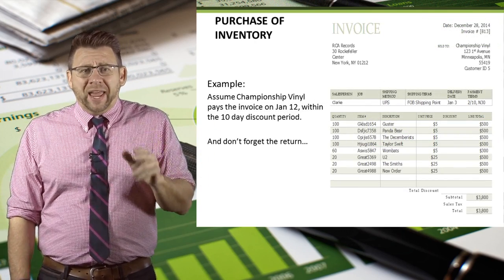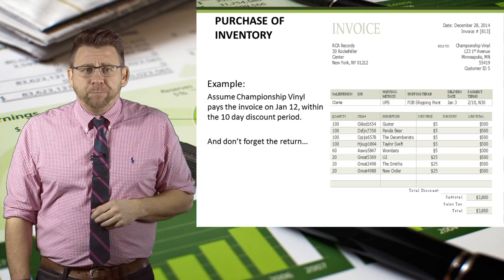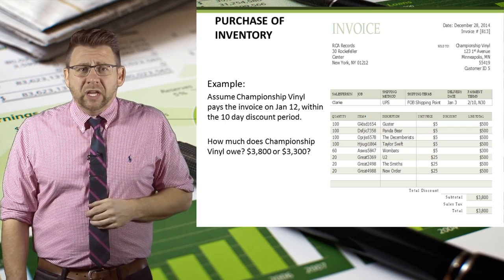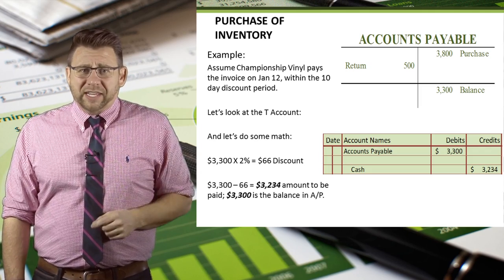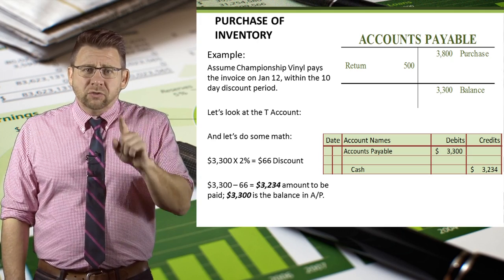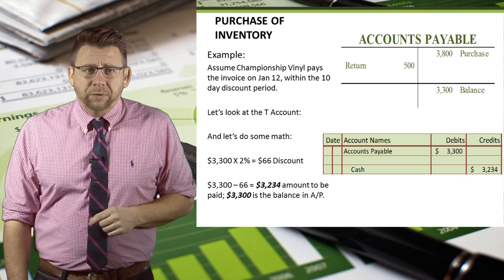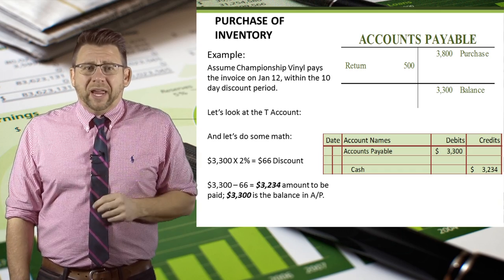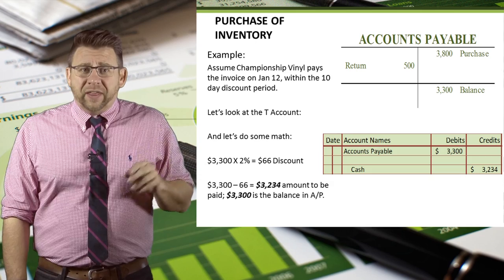Let's assume Championship Vinyl pays the invoice on January 12th, within the 10-day discount period. To figure out how much they have to pay, I like to look at the T-account for accounts payable. Initially, we credited the account for the purchase amount of $3,800. However, we also debited this account when we returned the Taylor Swift records, so the balance is $3,300. Make sure to reference the T-account so that you end up with the right amount owed. We owe $3,300, but a 2% reduction is a $66 discount, meaning we only have to pay $3,234.